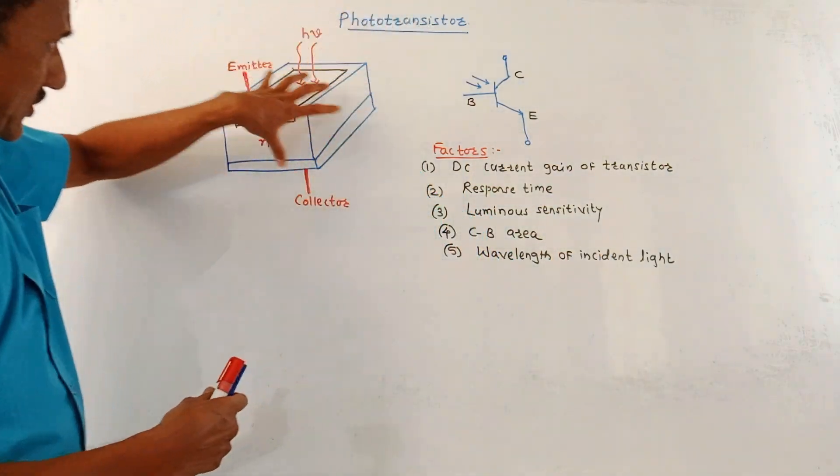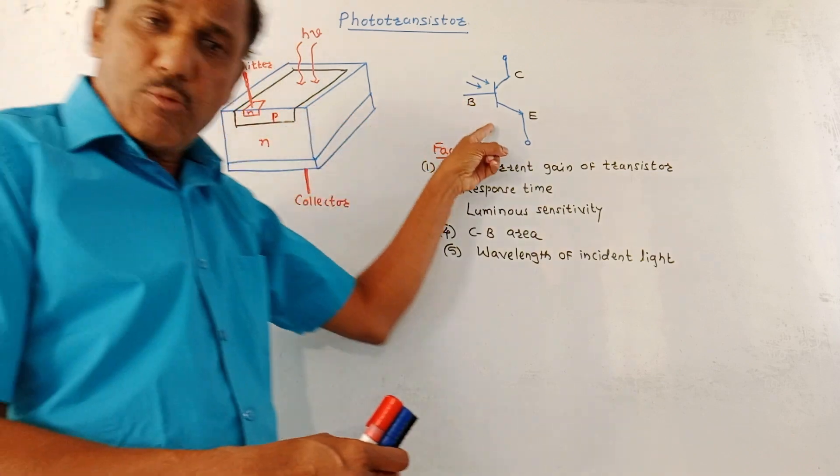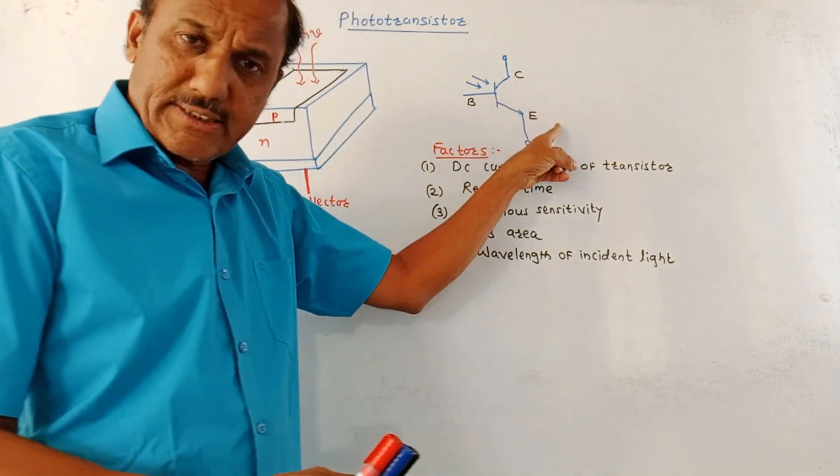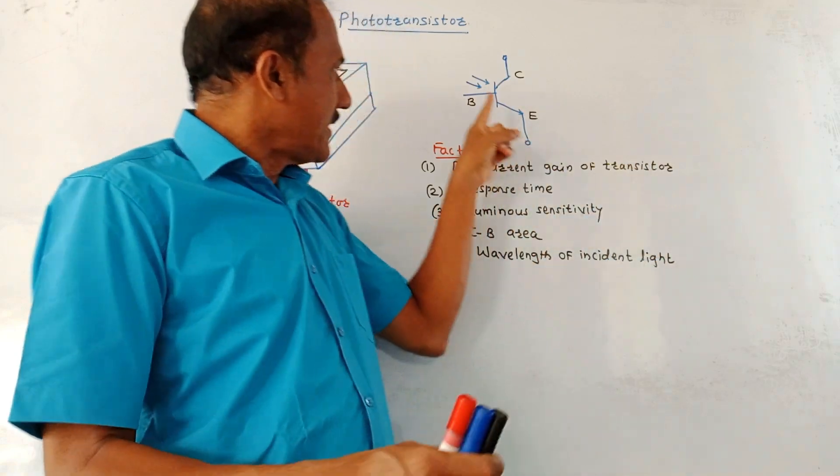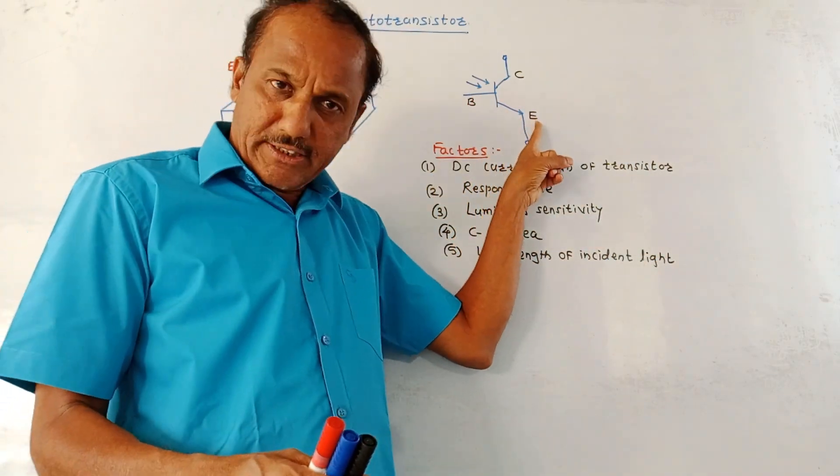This is the construction diagram of a phototransistor. This is the symbol of phototransistor. As shown in this symbol, there are three terminals: base terminal, collector terminal, and emitter terminal.